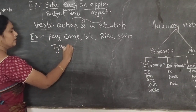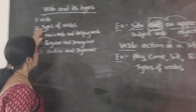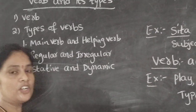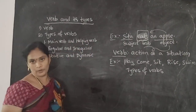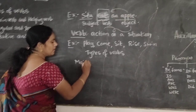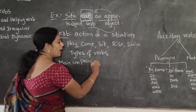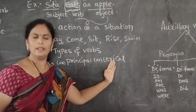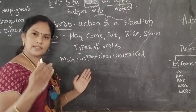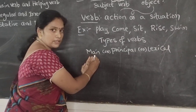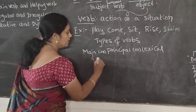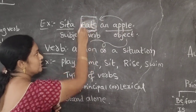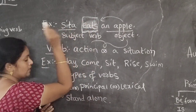Now when we discuss about the types of verbs. As you see here, the types of verbs — the first one is main verb and helping verb. So now we differentiate between what is a main verb and what is a helping verb. We can call the main verb as a principal verb or lexical verb. The main verb is a word which describes an action. The main verb doesn't depend on anyone — it can stand alone.